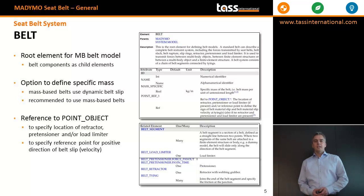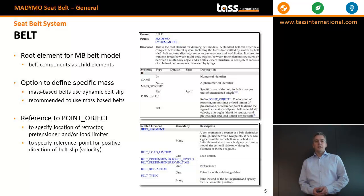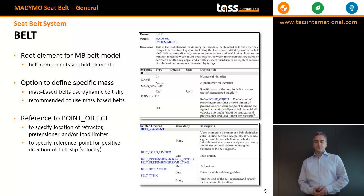First, we look at the key element belt. This is the root element or container element for the MB belt model. It has several child elements: belt segment, belt retractor, belt tying, belt load limiter, and pretensioner. In belt, you can define whether you want a mass-based belt or a massless belt using the attribute mass-specific. It is generally recommended to use mass-specific belts to enable dynamic belt slip. Also, in this element you define a point object as a reference, which specifies the location of the belt pretensioner, load limiter, or retractor, and also specifies the direction of positive belt slip.